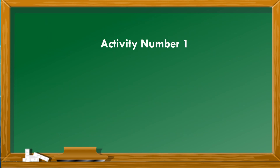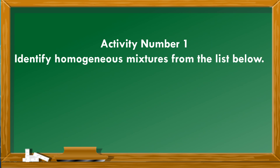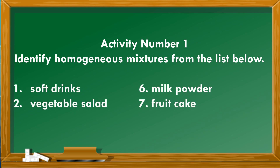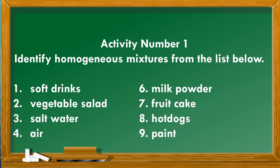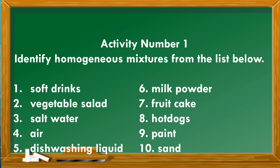Now let us see what you have learned. For activity number one, identify homogeneous mixtures from the list below: soft drinks, vegetable salad, soap water, air, dishwashing liquid, milk powder, fruit cake, hot dogs, paint, and sand.